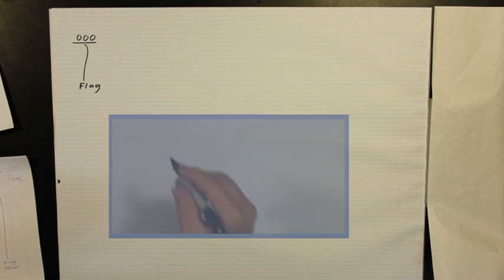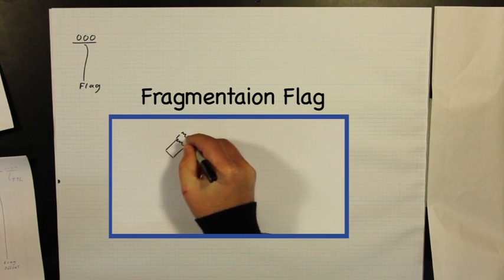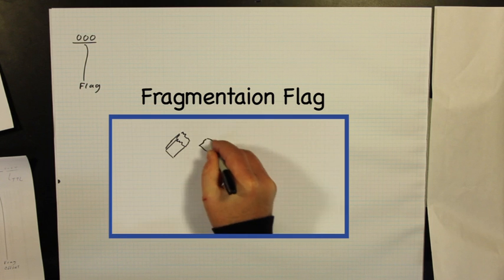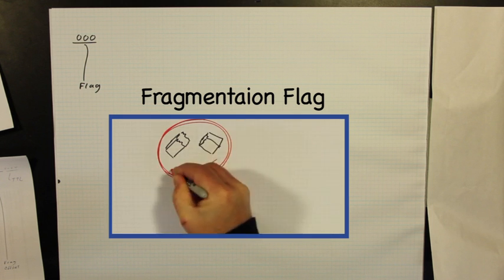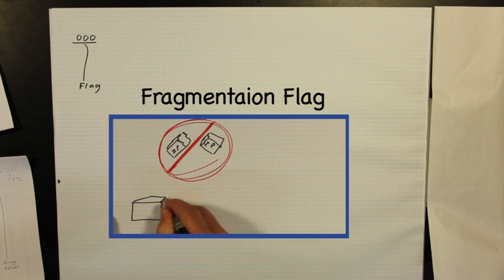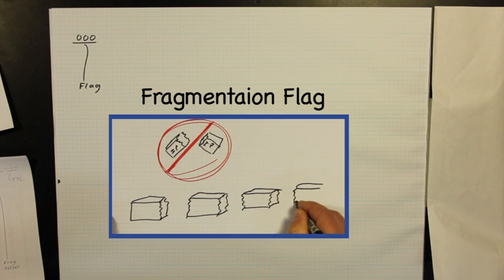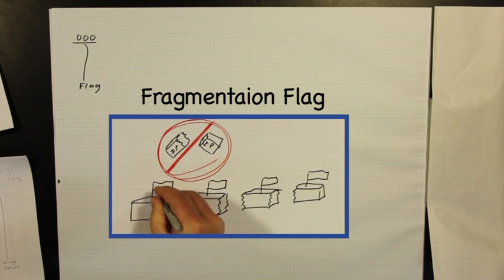These three bits are used to indicate: one, don't fragment this packet, or two, there are more fragments following this one. Packets are sometimes broken up when they are too long to pass easily through a network.